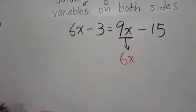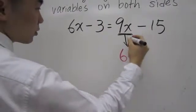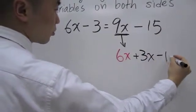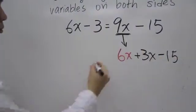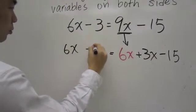So I know that I need to have a 6x. Well, if I have a 6x, what's left over is a 3x because 6x plus 3x gives me 9x. I'm going to bring everything else down, the minus 15, the equal sign, and everything on the left, 6x minus 3.